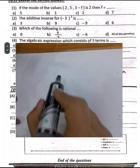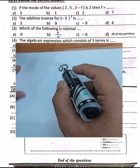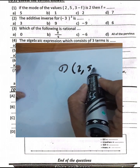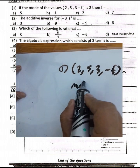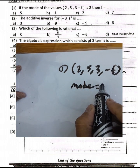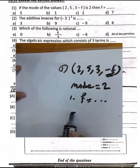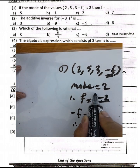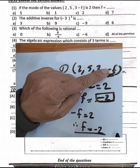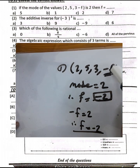MCQ question number 1: if the mode of the values 5, 3, negative f is 2, find f. Since the mode is 2, negative f must equal 2, so f equals negative 2. This works because negative times negative equals positive, giving us 2 as the mode.